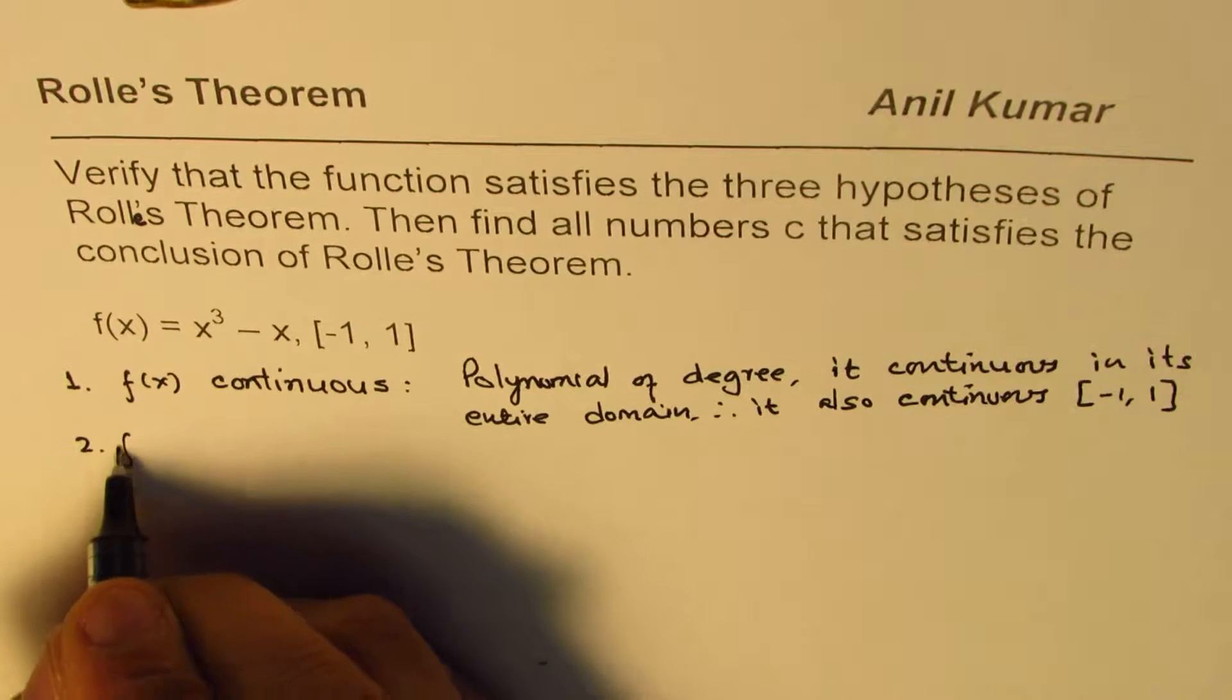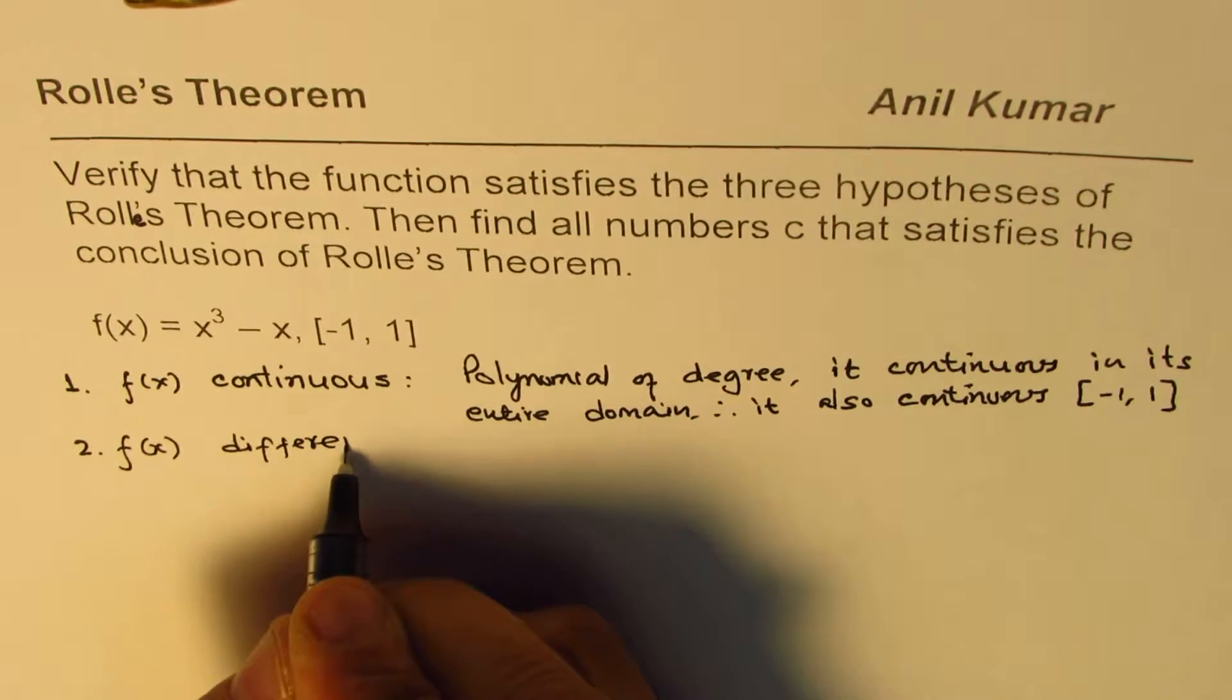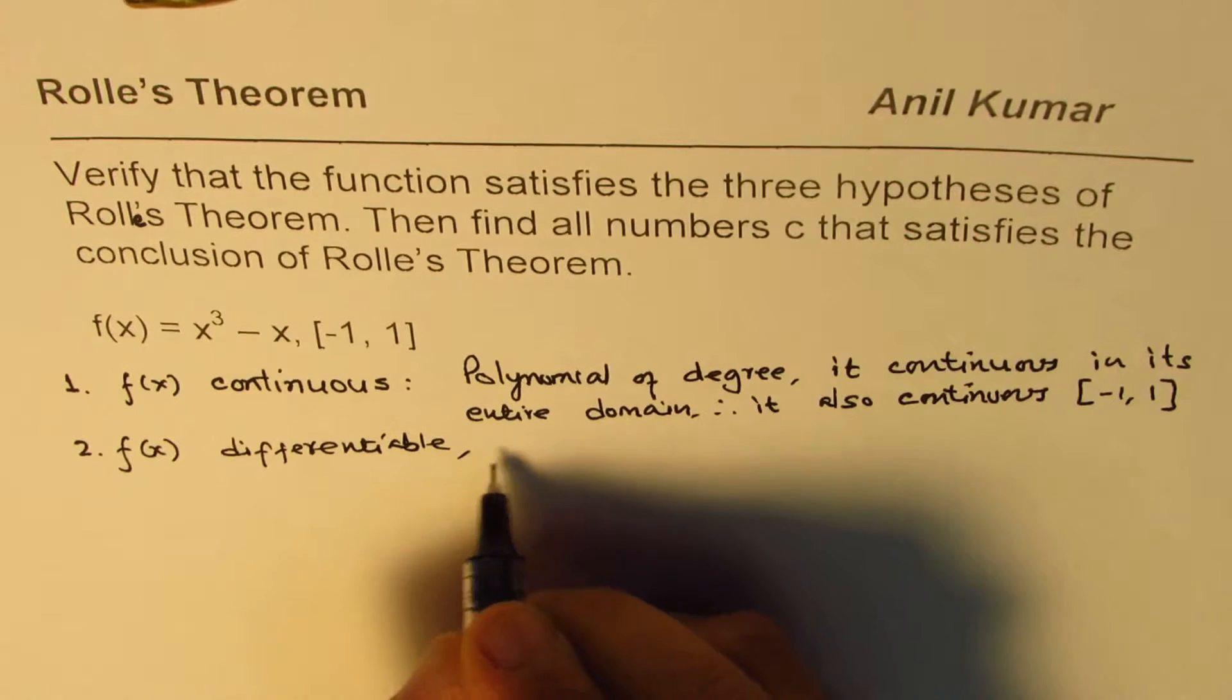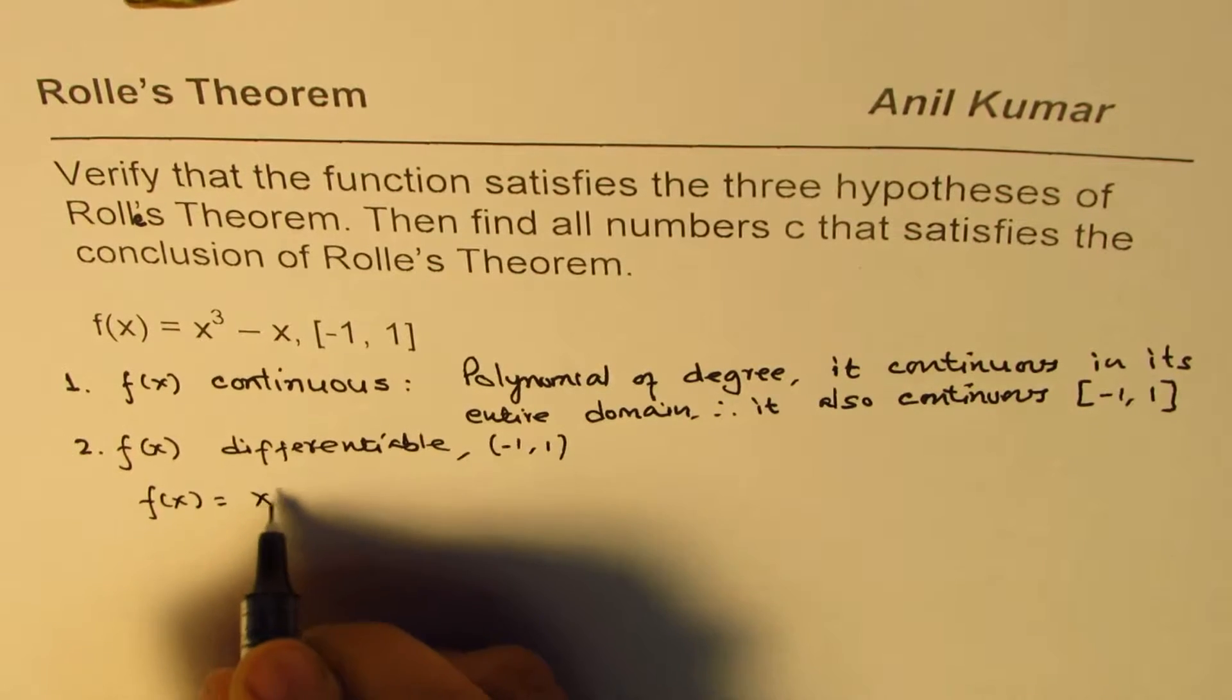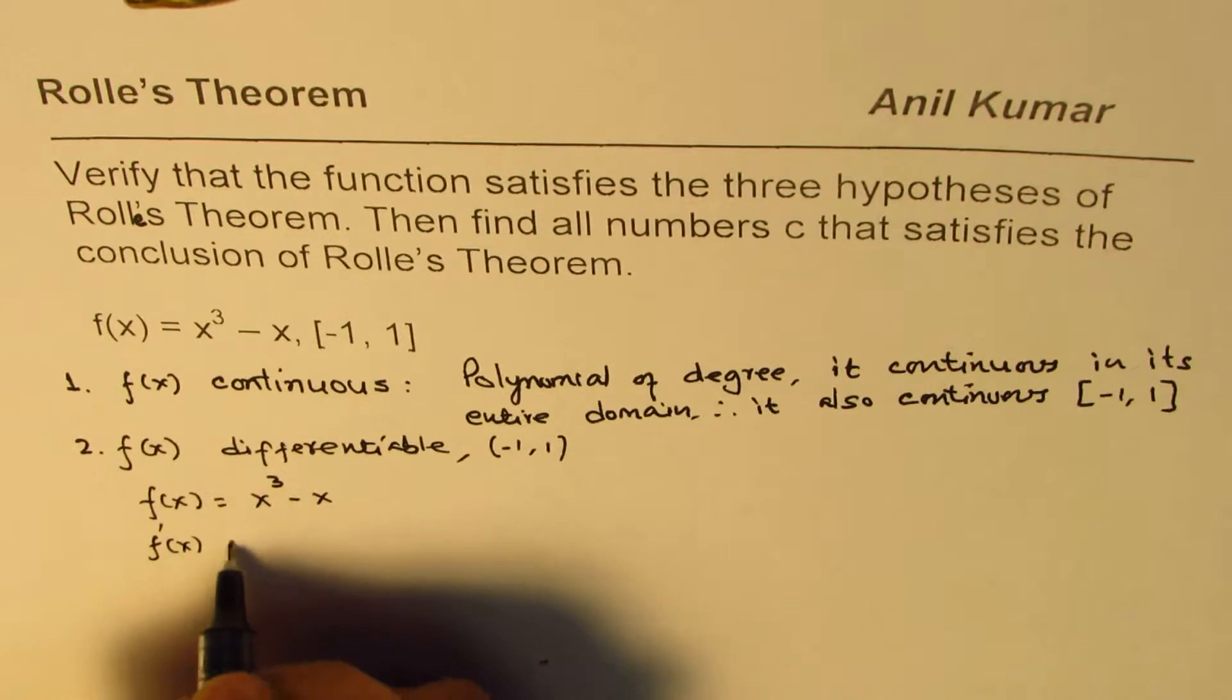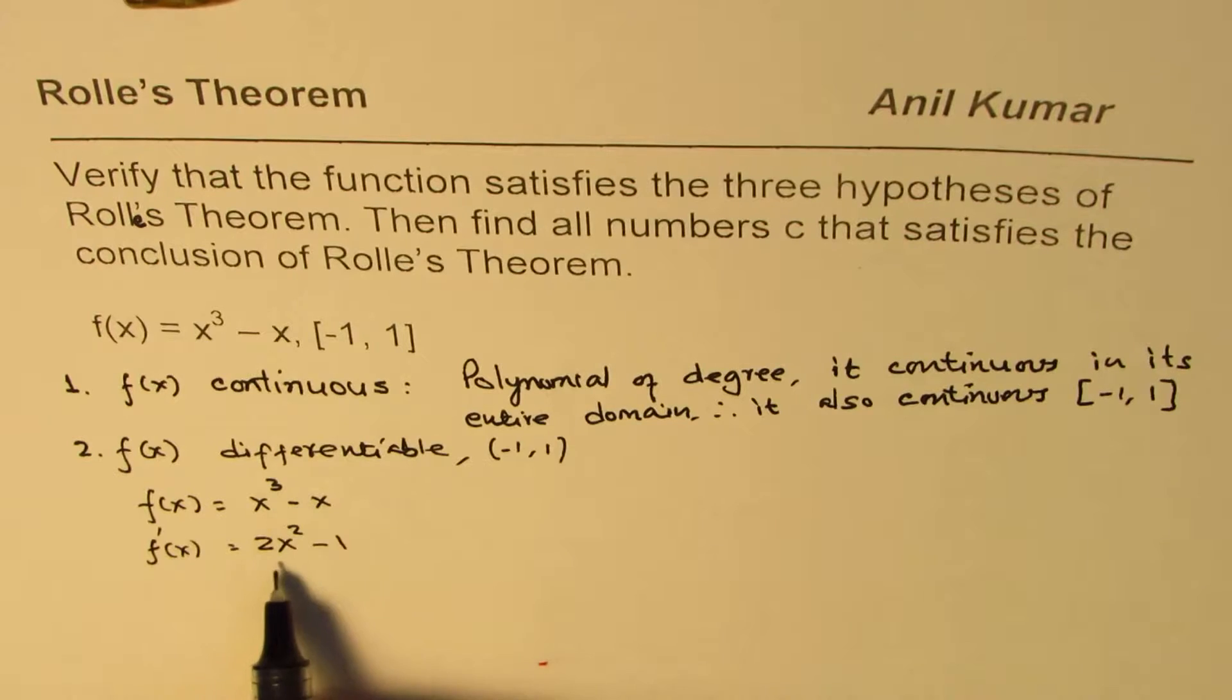Second thing we need to prove that f(x), the given polynomial, is differentiable in open interval (-1, 1). So we are given f(x) = x³ - x. Derivative of this function is 3x² - 1, so as you can see it is differentiable in the entire domain.